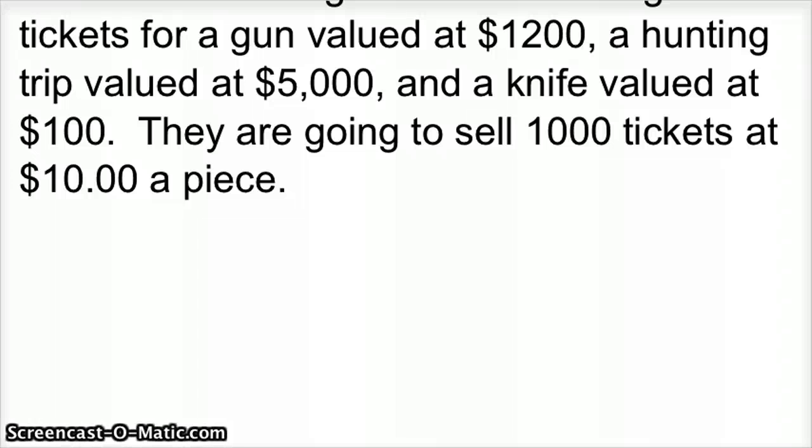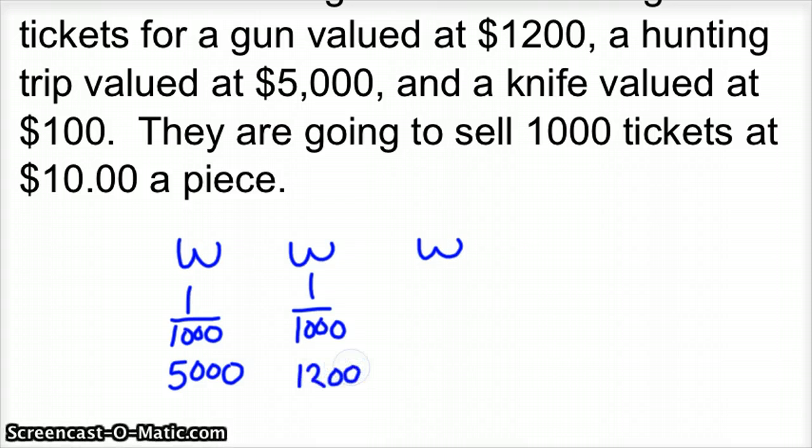In this case, we've got three columns for winning. Win, win, win. You've got a 1 in 1,000 chance of winning the $5,000 prize. You've got a 1 in 1,000 chance of winning the $1,200 prize. And you've got a 1 in 1,000 chance of winning the $100 prize. To lose, we've got 997, there are 997 losers in this pile of 1,000 tickets.